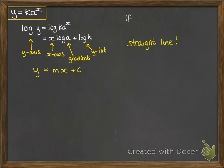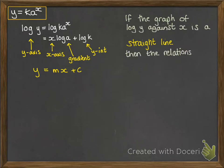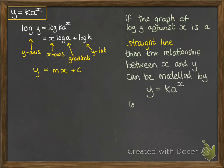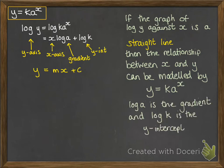In this situation, we've plotted the graph of log y against x, and it gave us a straight line. That then means that the relationship between x and y can be modeled by the equation of the form y equals ka to the power of x, where log a is the gradient and log k is the y-intercept of that graph that you drew that plotted log y against x.